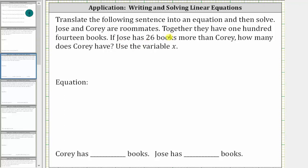Since Jose has 26 more books than Corey, let's let x equal the number of books Corey has. And since Jose has 26 more books than Corey, we can use the expression x plus 26 to represent the number of books Jose has.